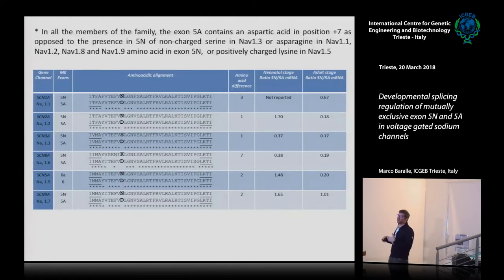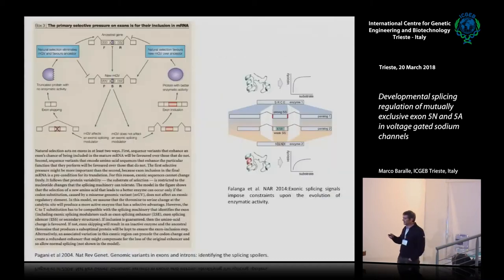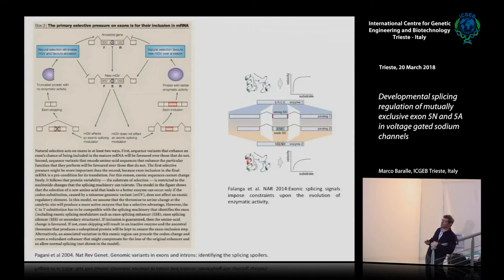In all members of the family, exon 5A contains aspartic acid at position +7, whereas in 5N this changes in most cases to lysine — a highly conserved area. Our reasoning was that when changes occur in duplicated exons, they may not only alter functional activity but also create a splicing enhancer to allow inclusion. This idea came from work published around 2004 suggesting primary selection pressure on exons was for their inclusion in the mRNA.